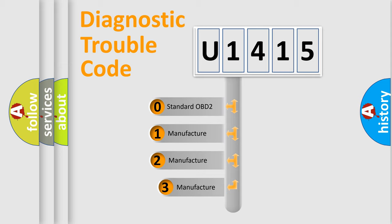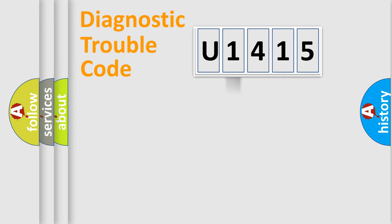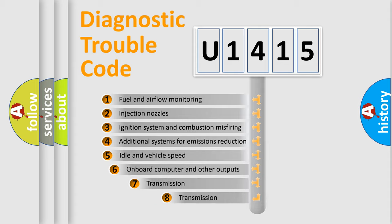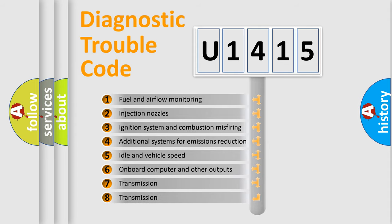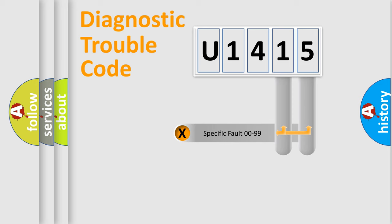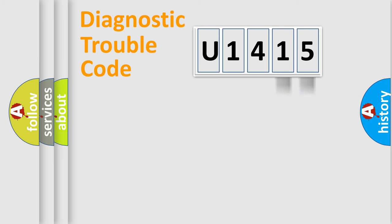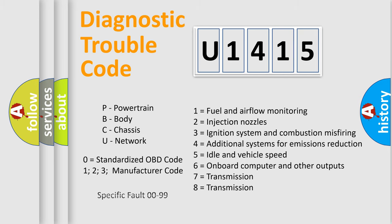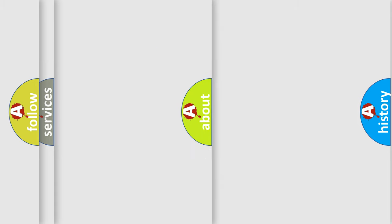If the second character is expressed as zero, it is a standardized error. In the case of numbers 1, 2, or 3, it is a more specific expression of a car-specific error. The third character specifies a subset of errors. This distribution is valid only for the standardized DTC code, and only the last two characters define the specific fault of the group. Such a division is valid only if the second character is expressed by the number zero.